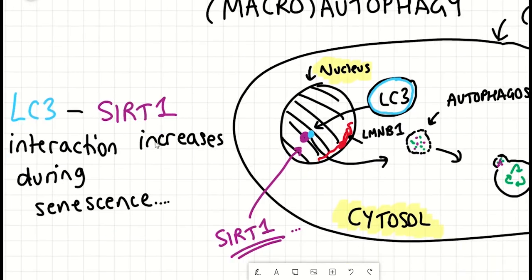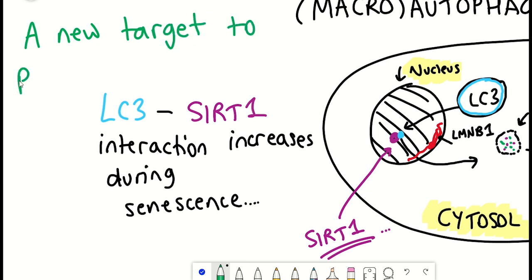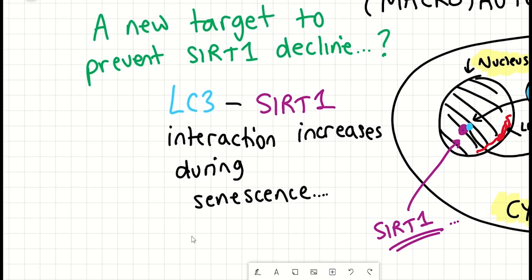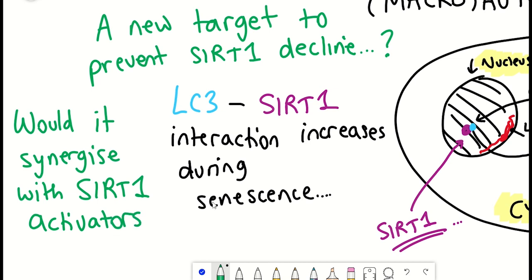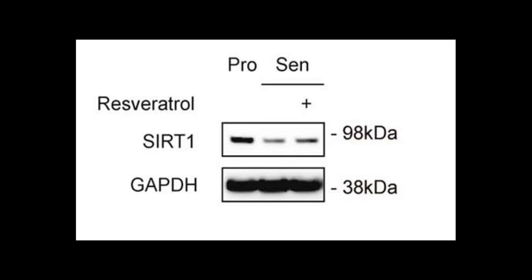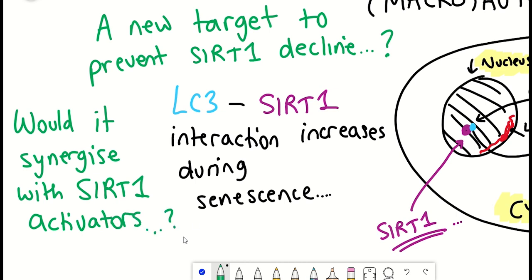So what can we take from this study? Well, firstly, it adds support to nuclear substrates also being targets of the autophagy pathway. But more on from that, it also potentially provides a new target in the treatment of reducing the severity of senescence. For example, if the degradation of SIRT1 could be inhibited, it may delay senescence onset, and then this may synergize with SIRT1 activators such as resveratrol. Because in at least one of the figures in this paper, resveratrol wasn't able to prevent the degradation of SIRT1. However, other studies show that it can activate SIRT1 activity. So by preventing degradation and activating the activity of SIRT1, you can see how it could have a combinatorial impact.